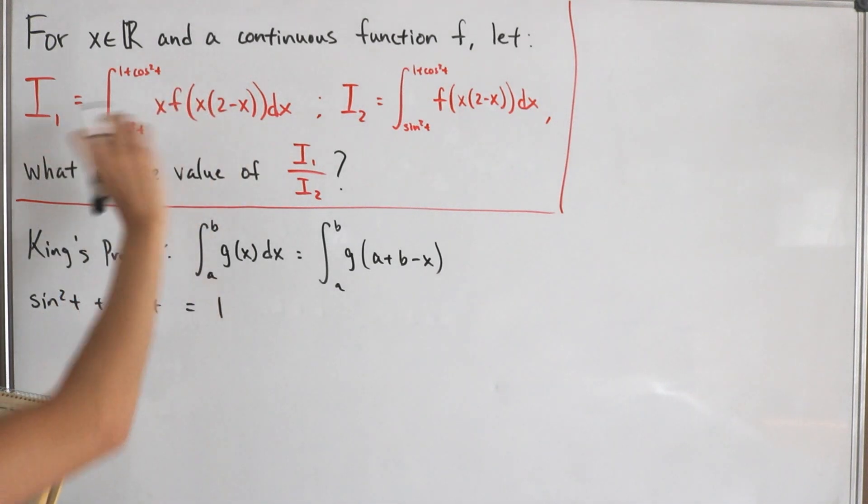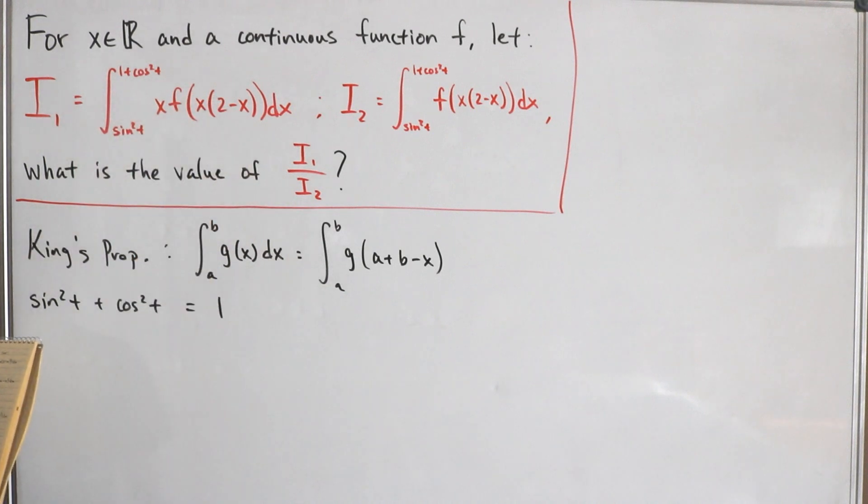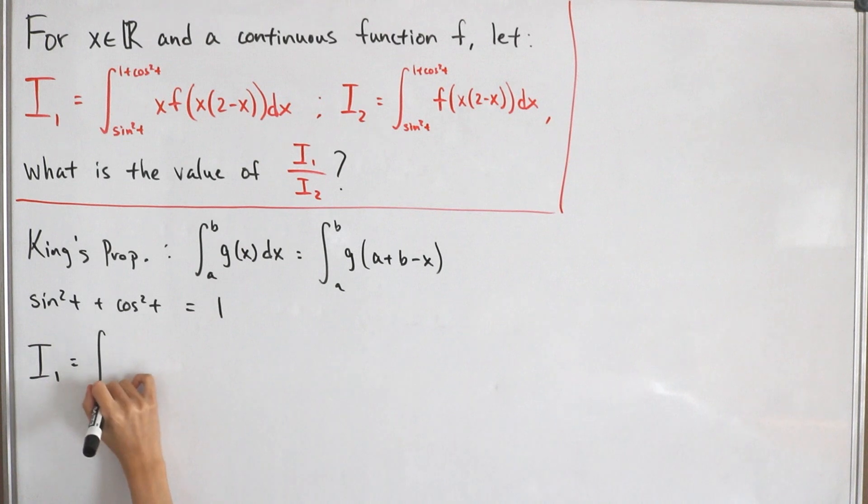So we're actually going to do a little bit of a substitution. Well, not really change of variables, but again it's using King's property with a different substitution. So rewriting our i sub one integral, let me start off with the given: sine squared of t and then one plus cosine squared t.